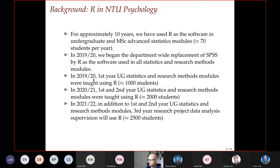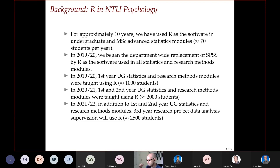Very different situations would arise dealing with first-year undergraduates with cohort sizes of over a thousand students. In 2019–2020 we started teaching statistics and research methods to first-year students — over 1,000 students. In the academic year just gone we taught around 2,000 undergraduates all their statistics and research methods modules through R, and in the next academic year we'll continue teaching first and second years.